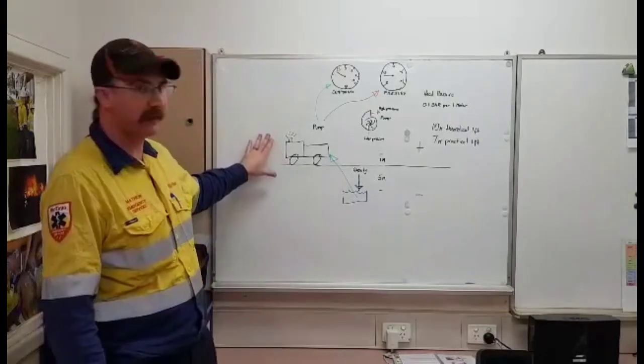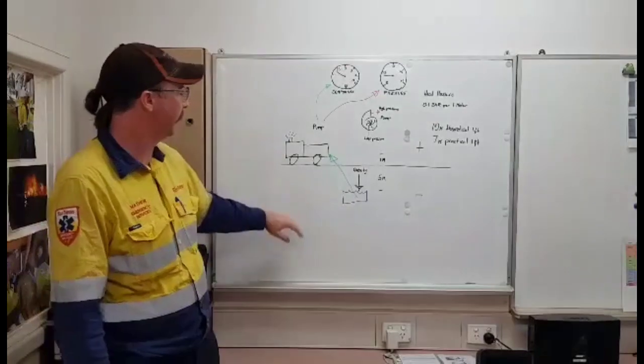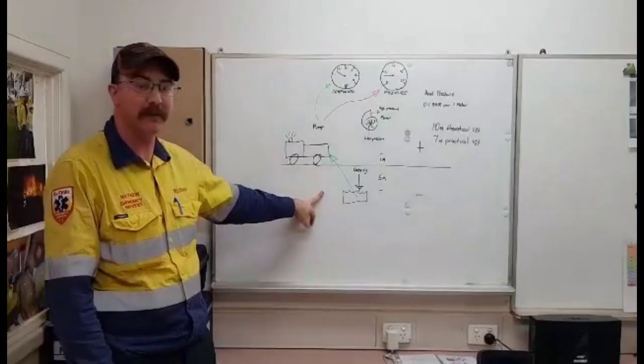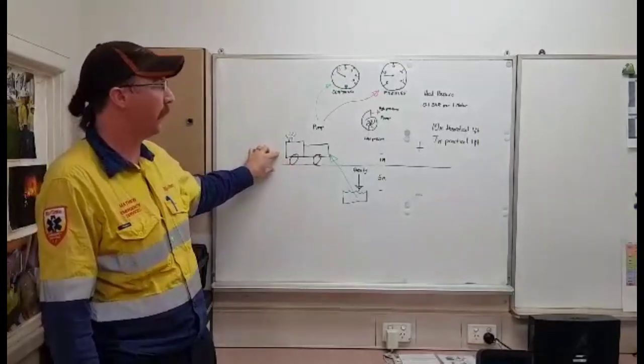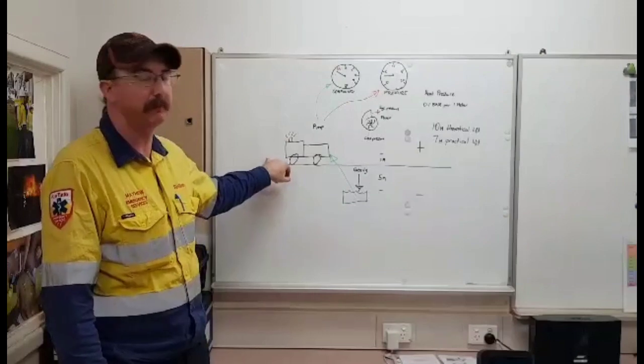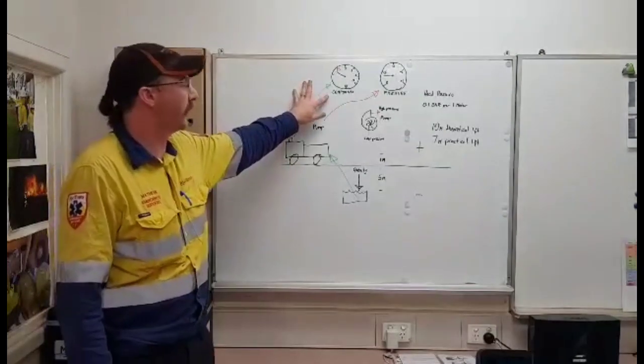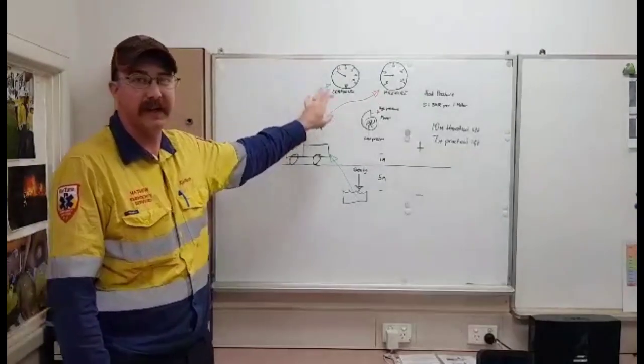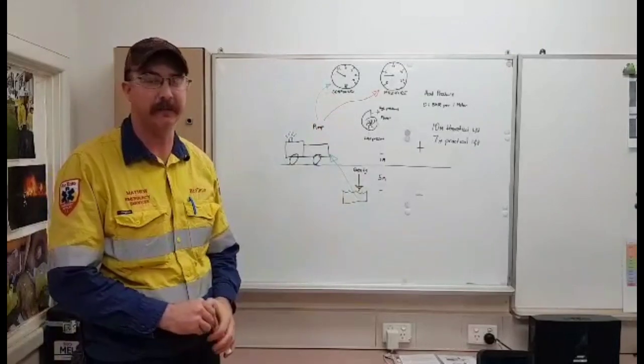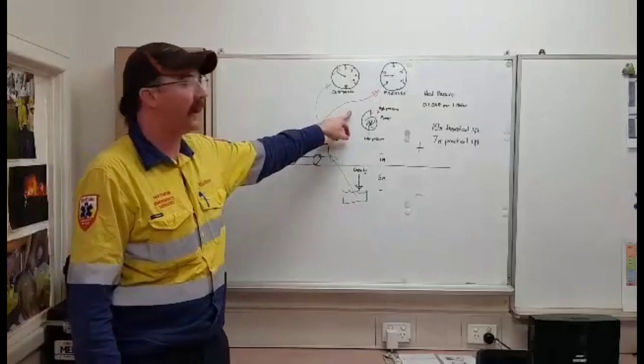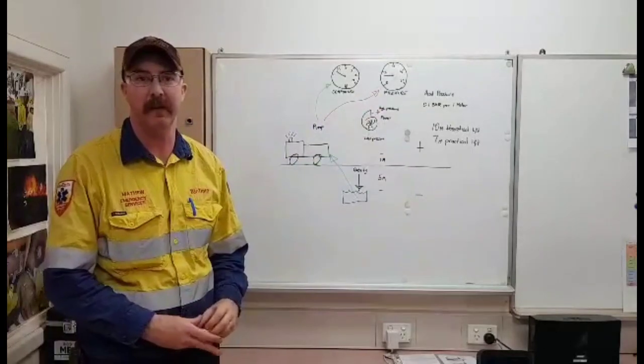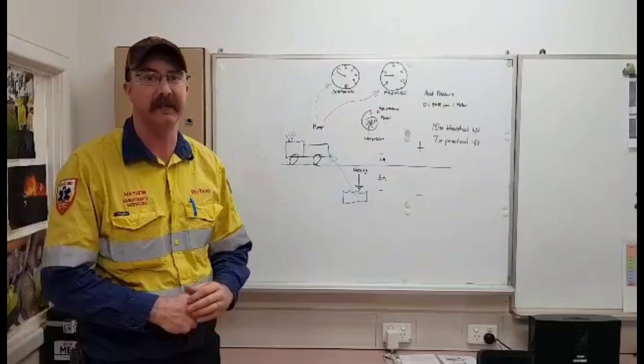So if we look at the context of the drawing here, we have 5 metres between the ground level and the surface of the body of water and we have an additional 1 metre from the ground level to the height of our pump. So this will make our compound pressure gauge read at minus 0.6 bar. Our outlet pressure or the pressure at our deliveries will be determined by what we are trying to achieve downstream.